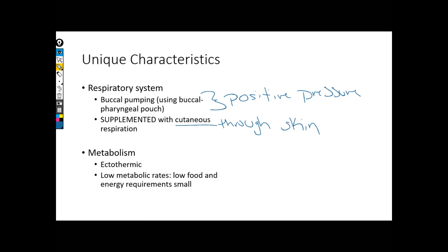Now metabolically, remember our amphibians are ectotherms. That in and of itself is not necessarily unique—fishes were ectotherms, we'll see our reptiles are also ectotherms. Now what does make it a little unique as ectotherms is they have very slow metabolism.